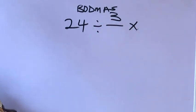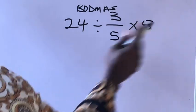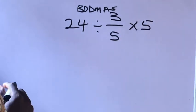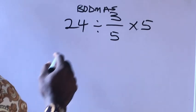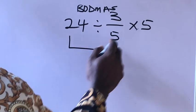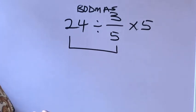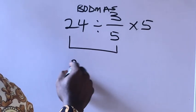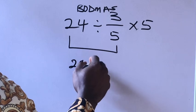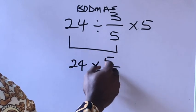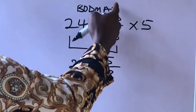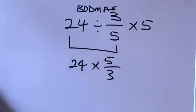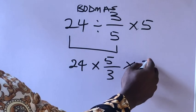We'll solve it like this. So 24 divided by 3 over 5 is going to be 24 times 5 over 3, because when we divide we change to times, 5 will go up and 3 will come down, times 5.